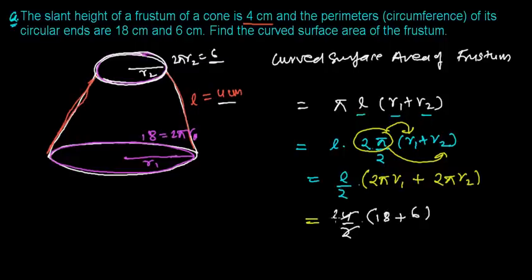And this is 2 times, 2 times 18 plus 6, that is 24, which is going to be 48. And since this is area, surface area, so it will be centimeter square. So the surface area of this cone is 48 centimeter square. Very simple.